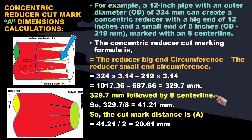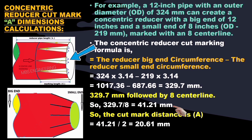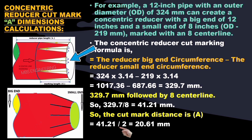The given pipe is divided into 8 centerlines, so 329.7 mm is divided by 8 centerlines, giving 41.21 mm. We need to mark cut marks on both sides of the centerline, so the obtained value is divided by 2. Therefore, the cut mark distance A = 41.21 ÷ 2 = 20.61 mm.